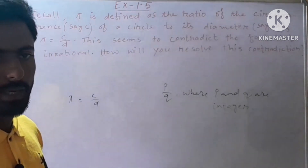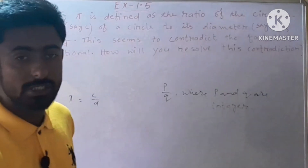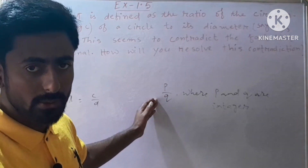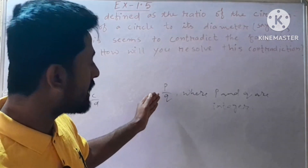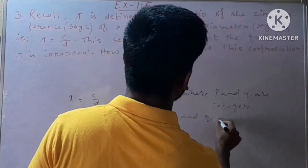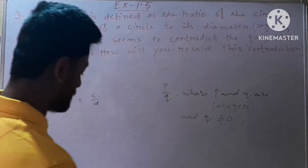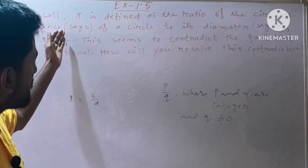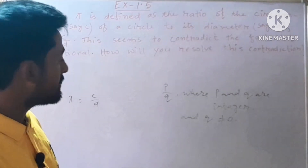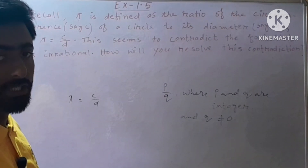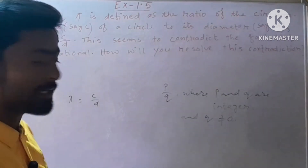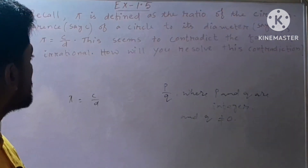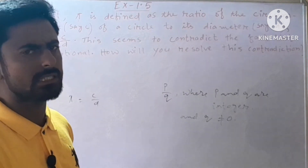Remember the definition of rational number: numbers of the form p by q, where p and q are integers and q is not equal to 0. But here, in the case of c and d, whether c is rational or irrational is not mentioned. Similarly, whether d is rational or irrational is also not mentioned. So in this case, we consider c as irrational.